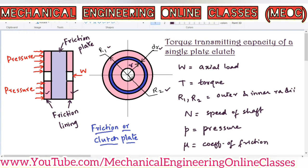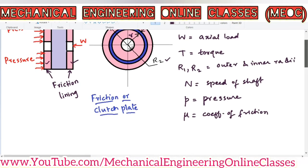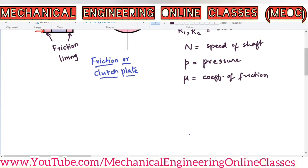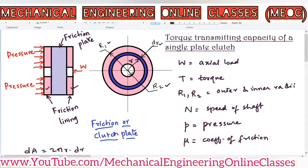Now, the differential elemental area dA will be equal to 2πr dr, because when the circular ring is cut open and kept straight, the length of that rectangular element will be 2πr and the thickness would be dr. So it is length into breadth.